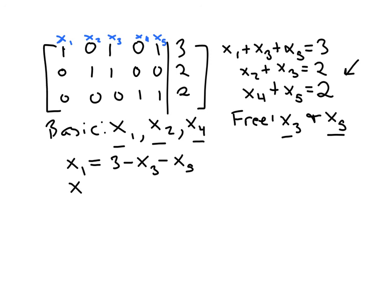Take that second equation and solve for the next basic variable, x2. So x2 is equal to 2 minus x3. And take that third equation and solve for the next basic variable, which is x4, 2 minus x5.